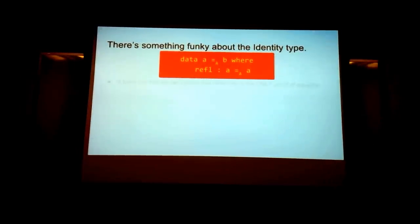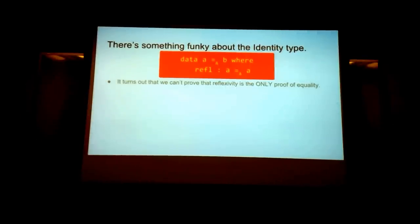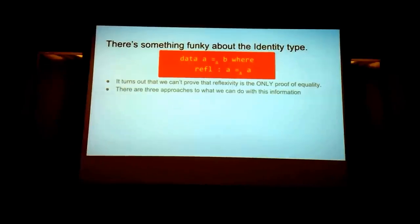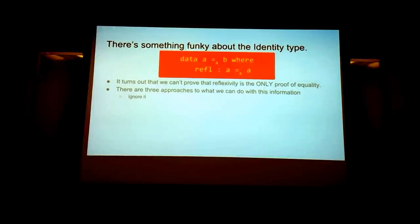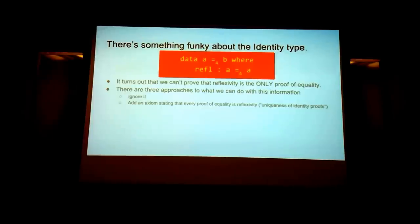There's something weird about identity. It turns out that within the theory itself, we can't actually prove that reflexivity is the only way to prove equality. There are three approaches you can take: the first is to ignore it and just carry on as normal.